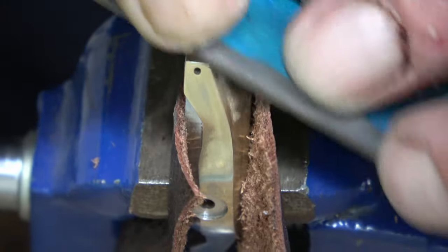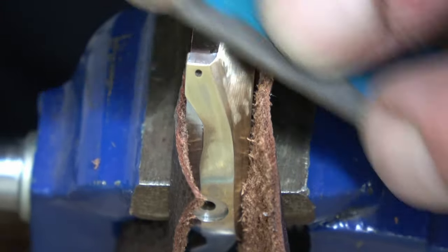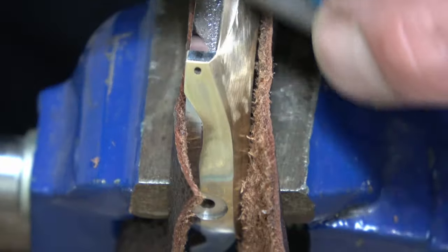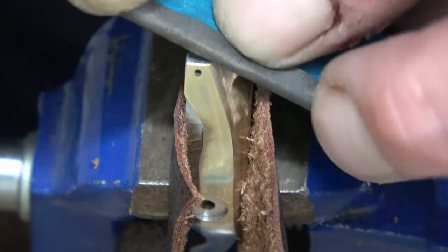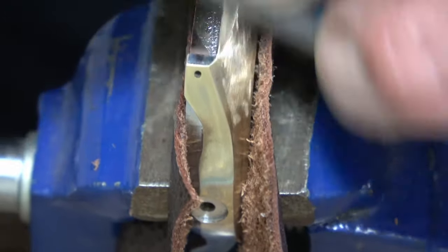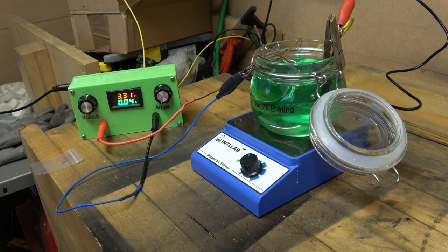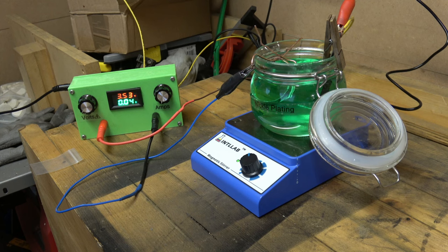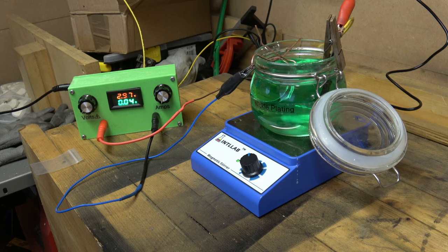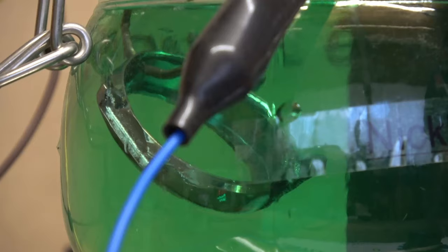But once it is all smooth, I'll polish it up again on the wheel, and then we'll pop it into this nickel-plating solution. My little homemade junkie power supply. You can see it moving around in there—it's on a stirrer. That's what that blue thing is that it sat on.